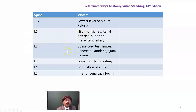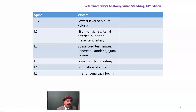At lumbar vertebra L2, the spinal cord terminates. Actually, the spinal cord terminates at the lower end of lumbar vertebra L1, and it is at the level of the lumbar L2 spine. It is a little variable — the spinal cord may terminate at the level of L2, or at the level of T12. In a newborn, it may reach up to the level of L3.